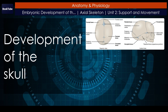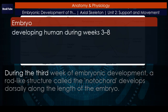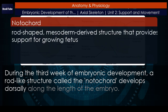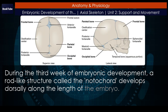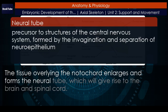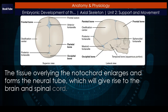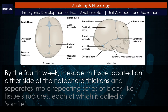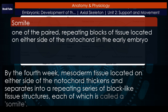Development of the skull. During the third week of embryonic development, a rod-like structure called the notochord develops dorsally along the length of the embryo. The tissue overlying the notochord enlarges and forms the neural tube, which will give rise to the brain and spinal cord. By the fourth week, mesoderm tissue located on either side of the notochord thickens and separates into a repeating series of block-like tissue structures, each of which is called a somite.